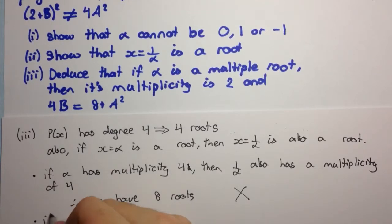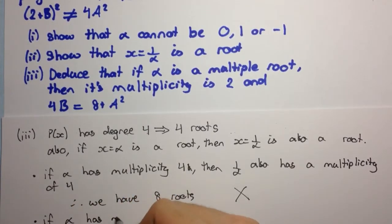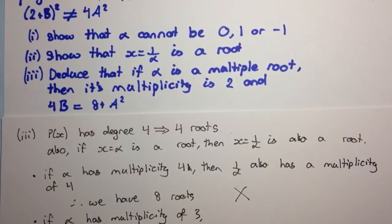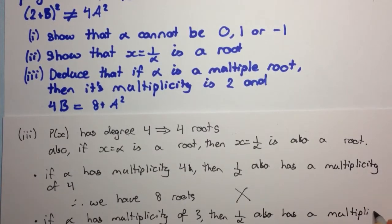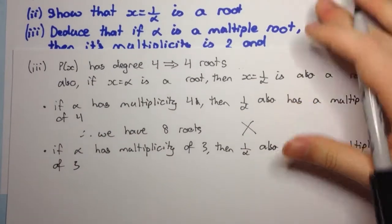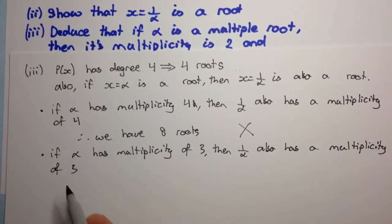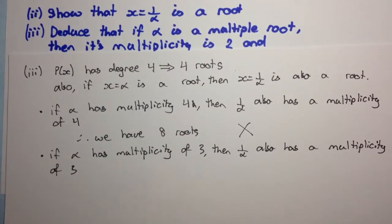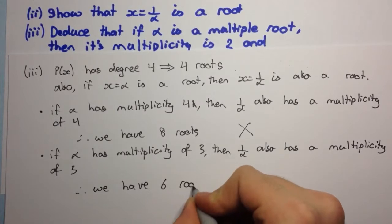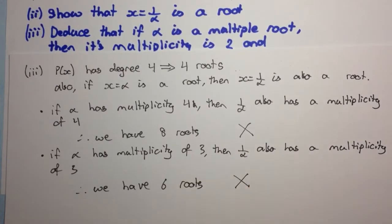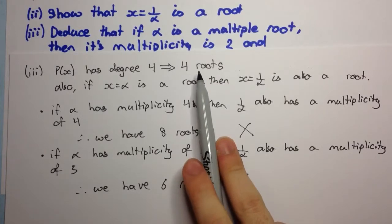If alpha has a multiplicity of 3, then 1 over alpha also has a multiplicity of 3, using the same argument. Therefore we would have 6 roots. Again, we can't have this case because we can have only 4 roots.